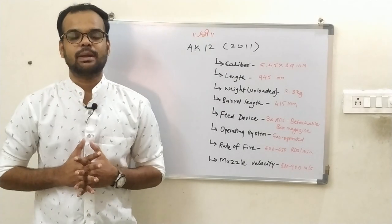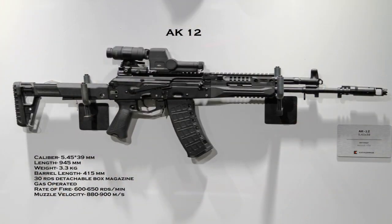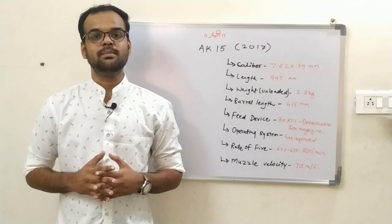The fifth weapon of this series is the AK-12, which came into operation in 2011. It has a caliber of 5.45×39mm, overall length of 945mm, weight of 3.3kg, barrel length of 415mm, a 30-round detachable box magazine, and is a gas-operated firearm capable of firing 600 to 650 rounds per minute with a muzzle velocity of 880 to 900 meters per second.